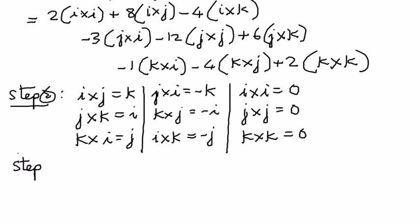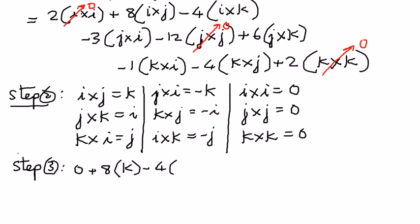Therefore — I'm going to call this step number 3 — we simplify these terms. 2 times i cross i is 0, j cross j goes to 0, k cross k goes to 0. So 8 times i cross j is k, negative 4 times i cross k is negative j, negative 3 times j cross i is negative k, minus 4 times k cross j.